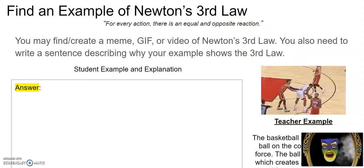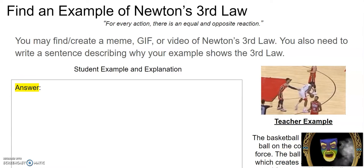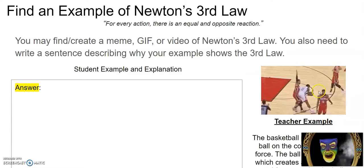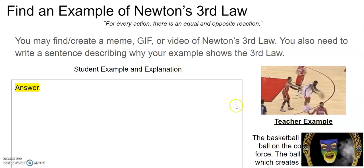My example is the basketball player spikes the ball on the court with a large force. The ball hits the ground which creates an opposite and equal force causing the ball to hit him back in the head. So he throws it as hard as he can and the same amount of force comes right back up and hits him right in the face.